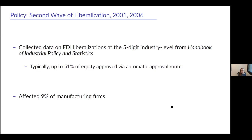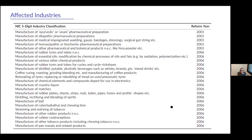These liberalizations look similar to 1991: automatic approval of foreign equity and caps raised to at least 51%, sometimes higher. But these subsequent liberalizations are much smaller — in our data they affect about 9% of manufacturing firms. The liberalizations span a wide range of industries at a very disaggregated five-digit level, going from pharmaceuticals to leather and chemical manufacturing to tobacco. This variation is what we use in all regressions.